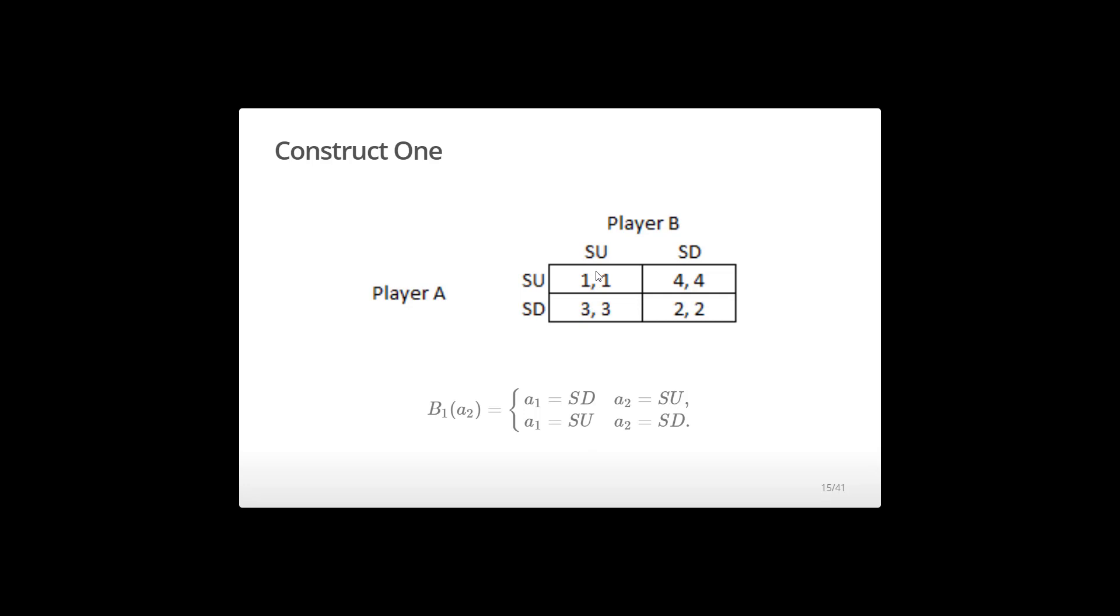So I am in this first column now. And I'm saying, well, what strategy gives me player one the highest payoff? So I am comparing this three to this one. And I'm saying, well, three is a bigger number. So player two chooses to speed up. I respond with slow down. All right.